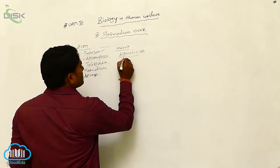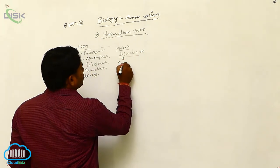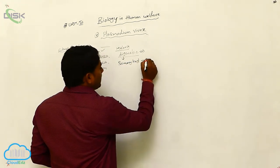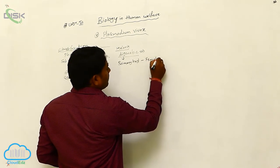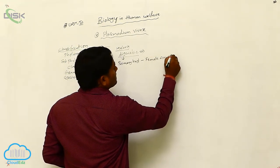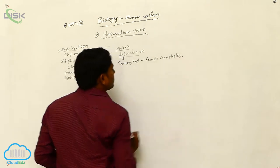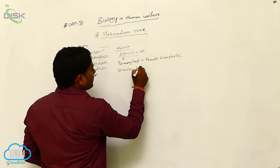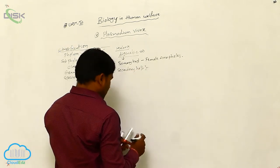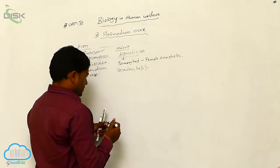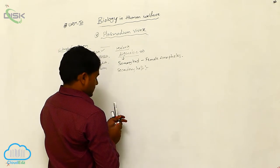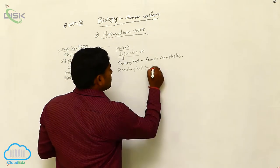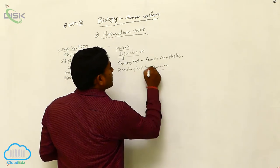In the digenetic parasite, the primary host is the female Anopheles mosquito. The secondary host is the human being. Man is the secondary host.